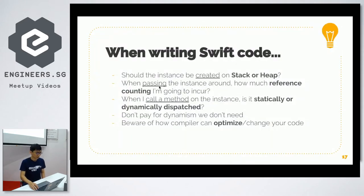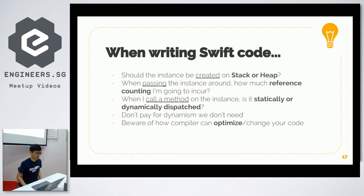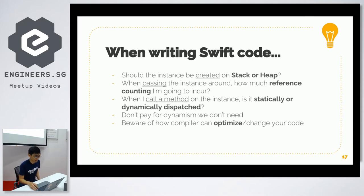For the first topic, what I want to leave you with: when writing Swift code, ask yourself these questions. Should the instance be created on the stack or the heap? When passing instances around, how much reference counting are you incurring? And when you call the method, is it going to be statically or dynamically dispatched? As a general rule of thumb, you don't want to pay for the dynamism you don't need.